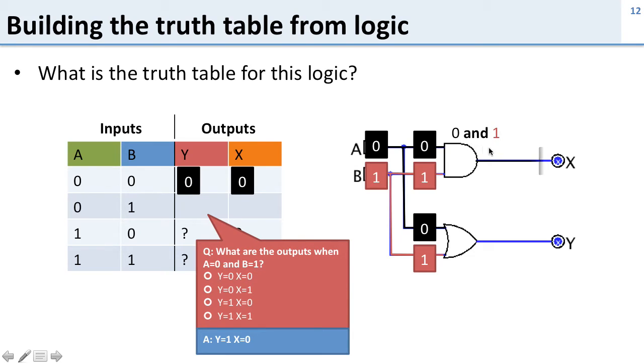Up here we have zero and one, which is still zero. That's why our X is going to be zero. But over here we have zero OR one, and zero OR one is going to be one. So our Y is going to be one. We get a one for Y and a zero for X.